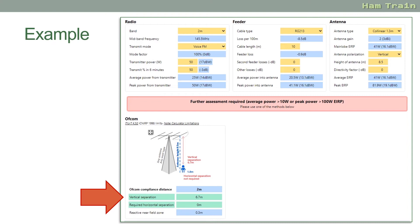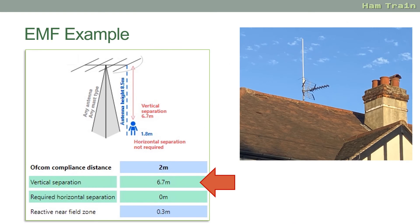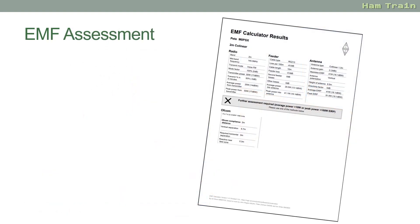The calculator comes up with an advisory that the Ofcom requirement is for members of the public to be 2 meters away from the antenna. In the example provided, people are 6.7 meters away from the antenna — very clearly outside that 2-meter requirement. So with a required separation of 2 meters and an actual separation of 6.7 meters, there are no problems at all.